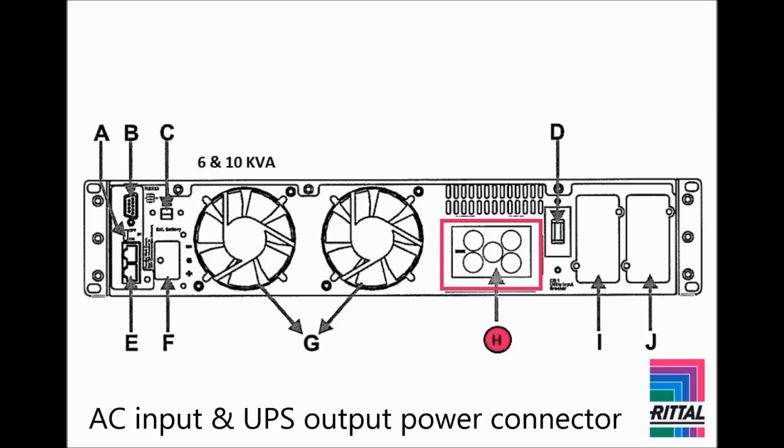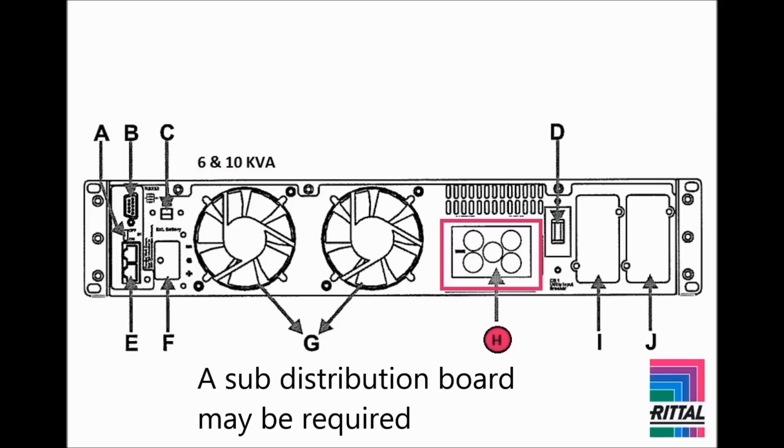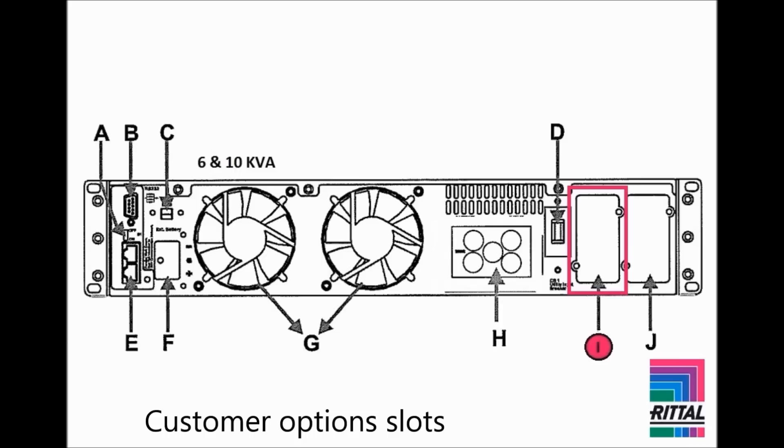Since these models do not have standard outputs like the 1, 2, and 3 kVA models, a sub-distribution board may be required for connecting the loads. The customer options slots allow connection of optional interface cards, such as a second RS-232 port, an RS-485 port, or an SNMP card.